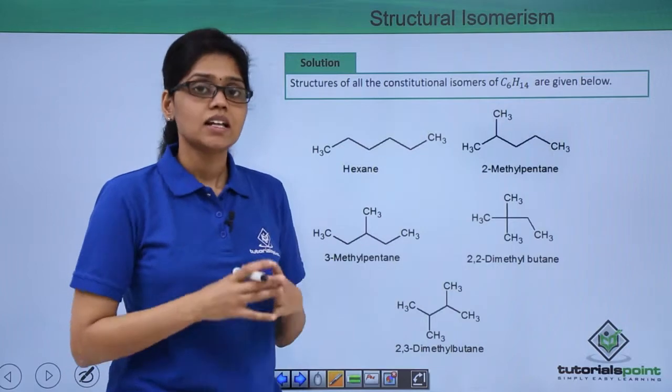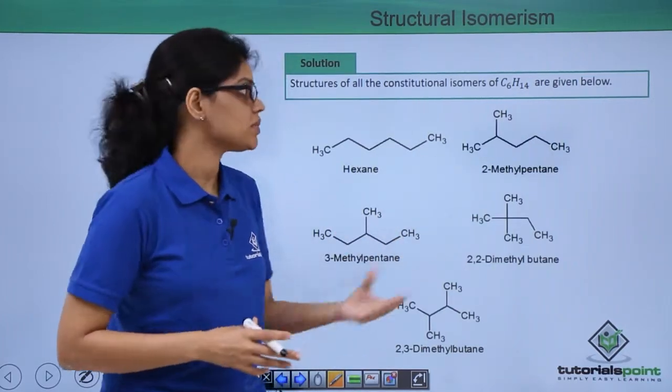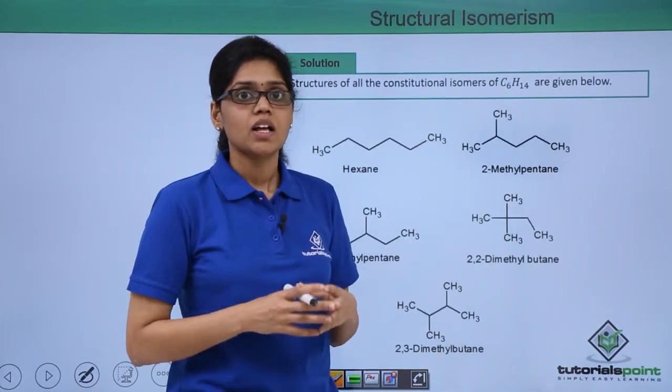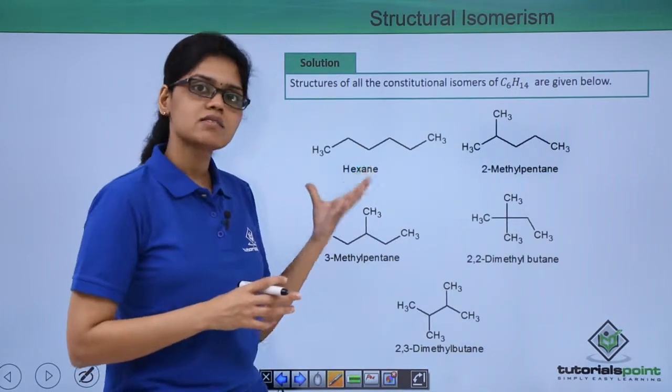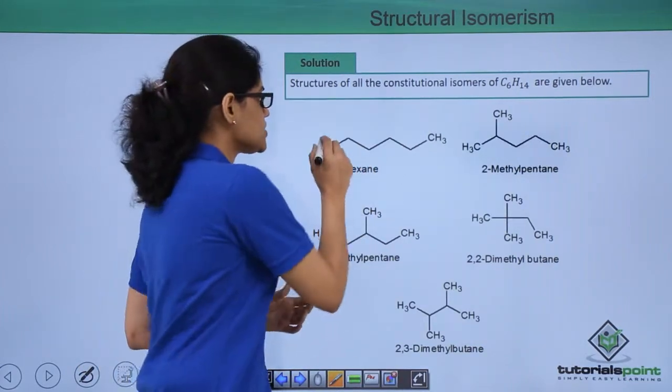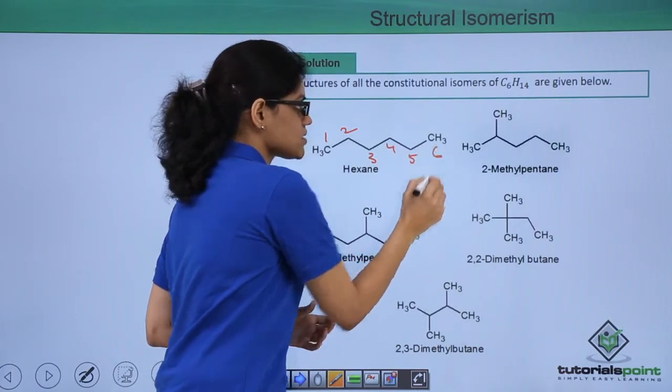You can see that there are essentially five different structural isomers possible in hexane. The first one is a simple straight chain alkane, which is n-hexane. If we number this chain, you can see the numbering would be 1, 2, 3, 4, 5, and 6.